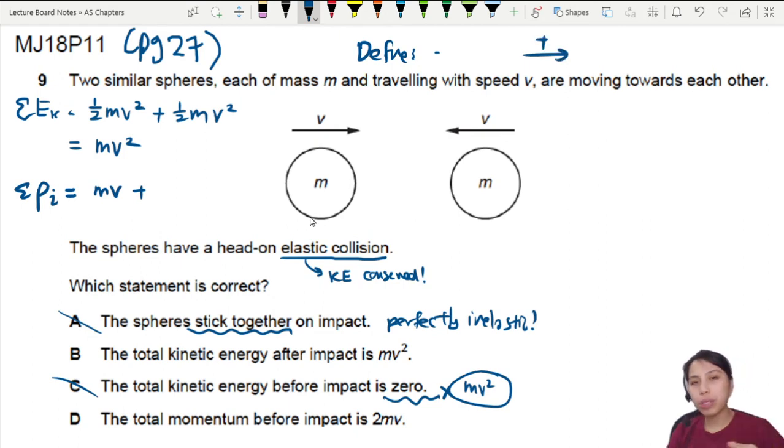So this is positive v and minus v. So if I want to find the total momentum, it has to be mv plus negative mv because the other ball is moving to the left. So this one, the total momentum is zero.